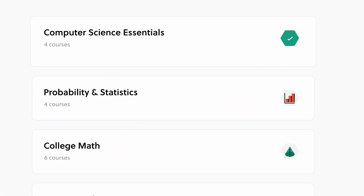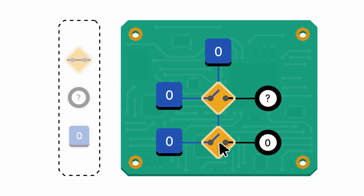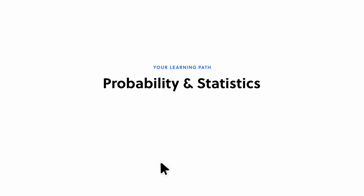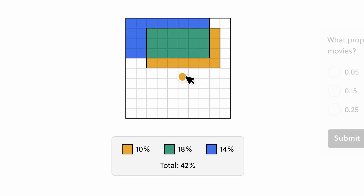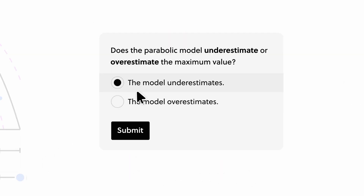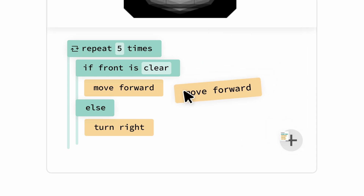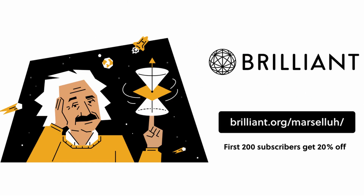Brilliant.org is the best way to learn math and computer science interactively. Brilliant has thousands of lessons from foundational and advanced math to AI, data science, neural networks, and more, with new lessons added monthly. Data science is actually a really important skill for game development — understanding the gaming market, game pricing models, and growth in the user base of your genre are all important aspects of marketing and releasing an indie game. To try everything Brilliant has to offer free for a full 30 days, visit Brilliant.org/Marcella or click the link in the description. The first 200 of you will also get 20% off Brilliant's annual premium subscription.